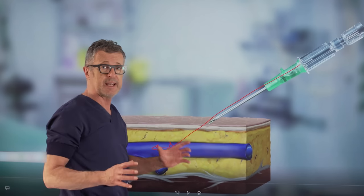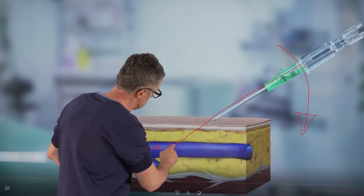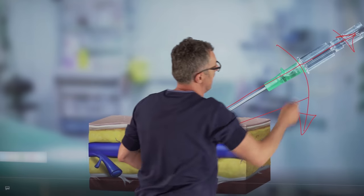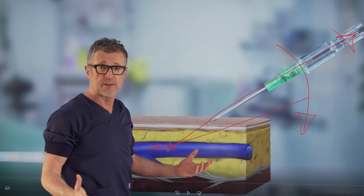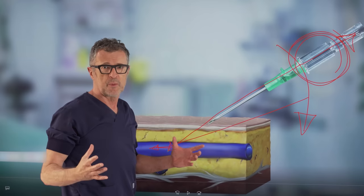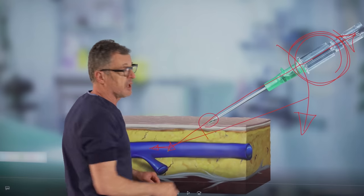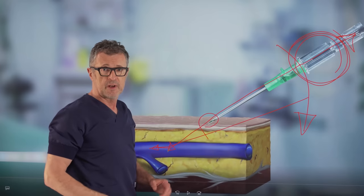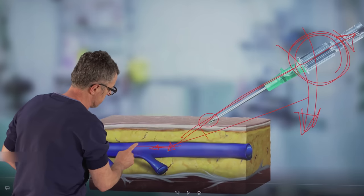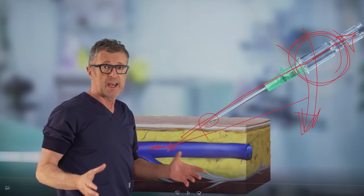Once inside the vein, you want to advance the needle catheter system a little bit deeper. But the only way to make that advancement is to lower the angle of the needle catheter insertion so you can place that needle catheter system deeper and then you simply take the needle out, leaving the IV catheter inside the lumen of the vein.